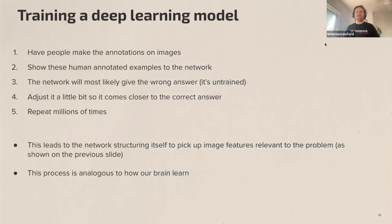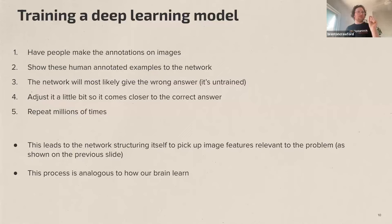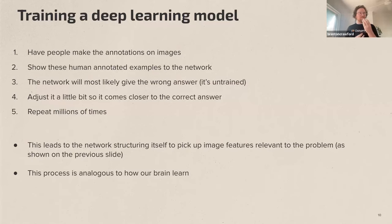How do we train a deep learning model? We feed it data labeled with the correct answer. In geological applications we annotate images — drawing around lots of different veins, for instance — creating hundreds to thousands of examples. We feed those examples through our untrained network, which initially gives the wrong answer: it might be shown a vein and call it a fracture because it hasn't been trained for that task. Then we allow the network to adjust itself based on those decisions.